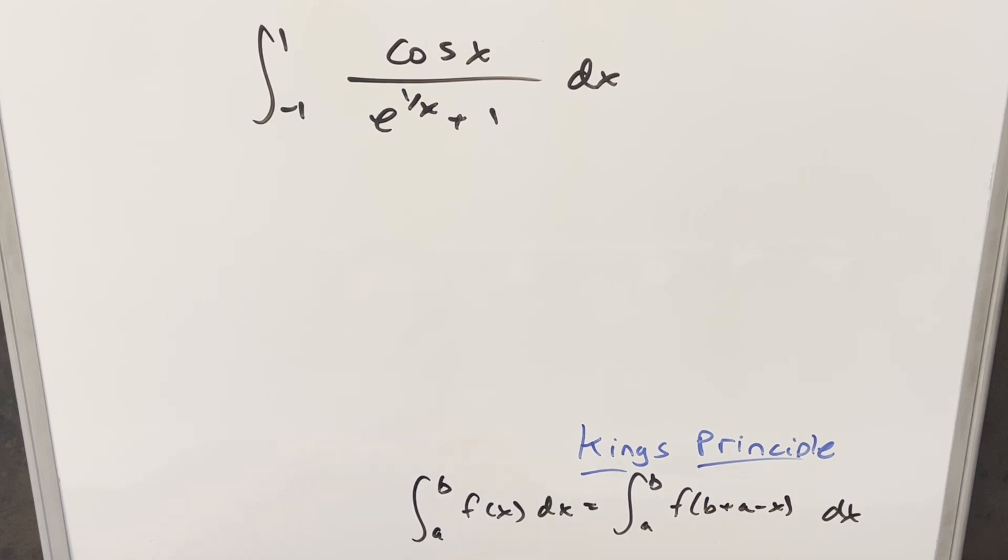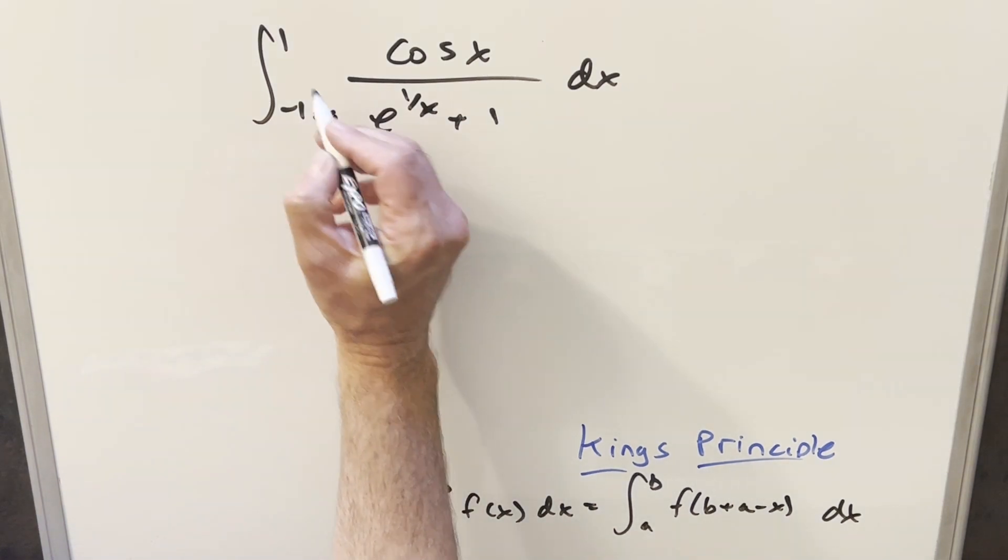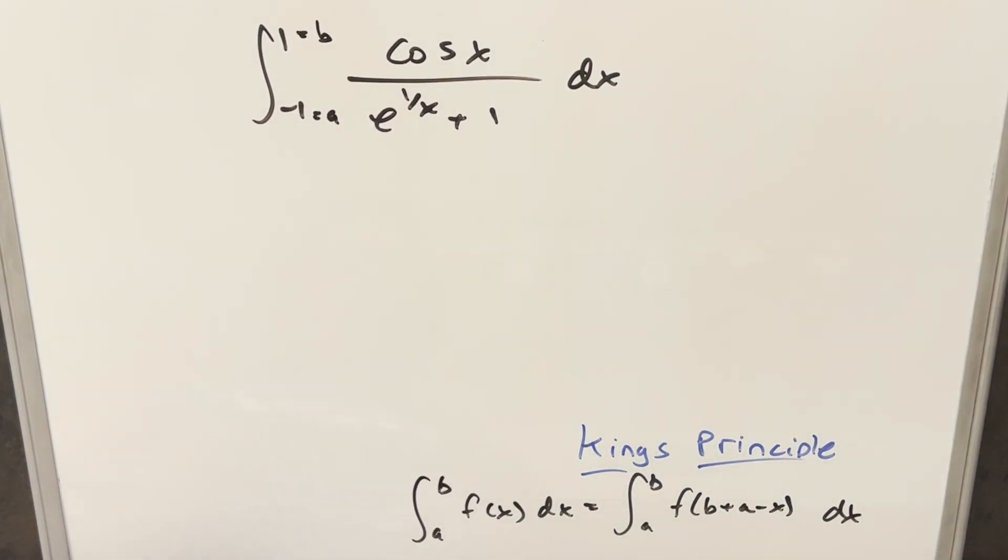The nice thing here is our bounds, this a to the b, our a value is minus 1, our b value is 1. And over here, when we use this, b plus a is just 0. So for this, in this case, this is actually going to be f of minus x. We just need to plug in minus x here.